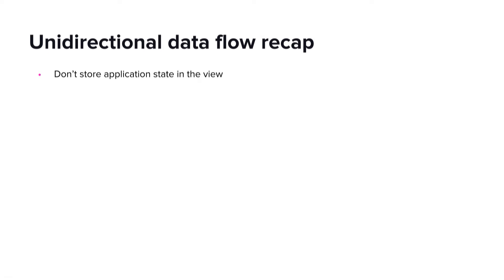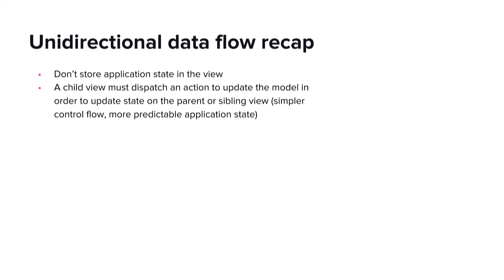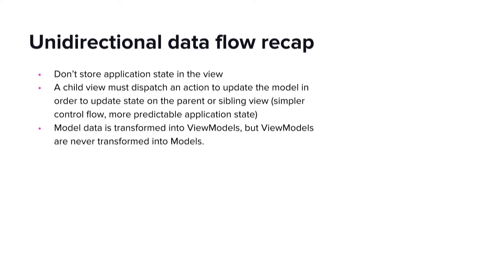Some of the principles we've learned from this unidirectional data flow: there are benefits when we do not store application state in the view — instead, we should use the model as the single source of truth. Also, as we saw in our React example, instead of going up through the parent to update a sibling view, a child view should dispatch an action to once again update the single source of truth. And finally, state can be transformed from model state to view state, but not the other way around.